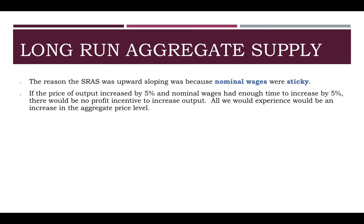There is no incentive to increase output. The only thing that would happen in this case is an increase in the price level. And it's for this reason that in the long run, when nominal wages are adjustable, we have a vertical long-run aggregate supply curve. The fact that nominal wages are sticky is the reason for the upward sloping curve. And when nominal wages have time to adjust, the curve becomes completely vertical.